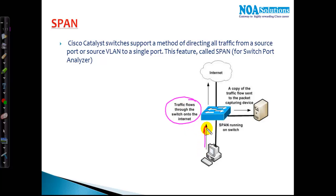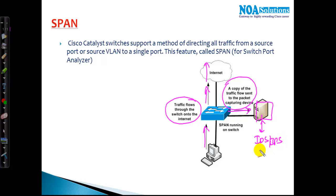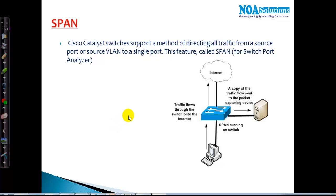As the diagram shows, whatever traffic flows through your switch from one user to another going to the internet, the same copy of that information is sent to a server as a capturing device. This capturing device can be your IDS/IPS for security, or it can have Wireshark running for packet capturing, or call recording software for VoIP networks. The reason can be anything, but ultimately we are directing a copy of the traffic.